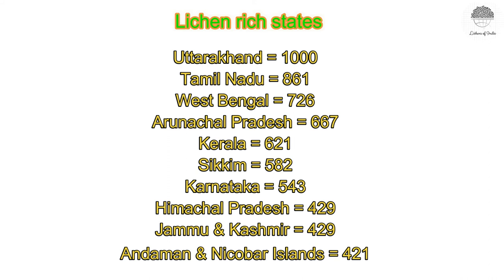Looking at different states, Uttarakhand has the maximum lichen diversity with about 1000 species, followed by Tamil Nadu with 861 species, West Bengal with 726 species due to Darjeeling and Sundarbans being well explored, Arunachal Pradesh with 667 species, Kerala with 621 species, Sikkim with 582 species, Karnataka with 543 species, Himachal Pradesh and Jammu & Kashmir both with 429 species, and Andaman & Nicobar with 421 species.